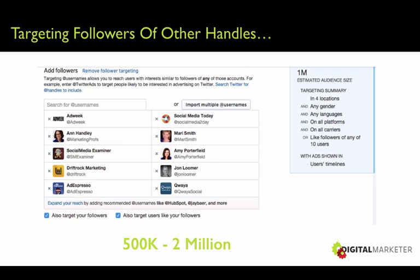It says 'also target your followers' — I usually keep that unchecked when going to cold traffic, because we've already introduced ourselves to those people. 'Also target users like your followers' — I found that allows for more scale, so I always leave that checked. If you feel like you're not getting enough reach with a campaign, go back and check that box. Here's an example of how to target different handles where your market might be hanging out.